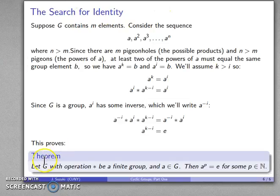And this proves an important result: If I have G with operation star as a finite group, and I have some element in G, then A to some power is going to be the identity for some P among the natural numbers. And this is an important result in abstract algebra and later on number theory.